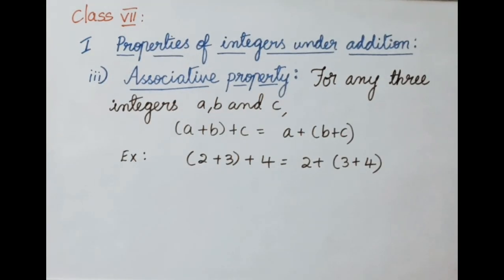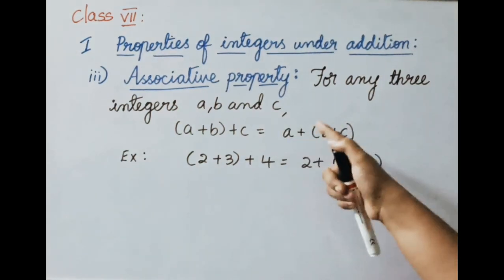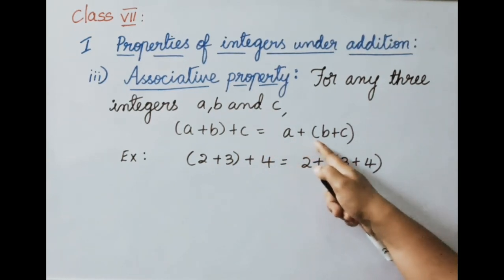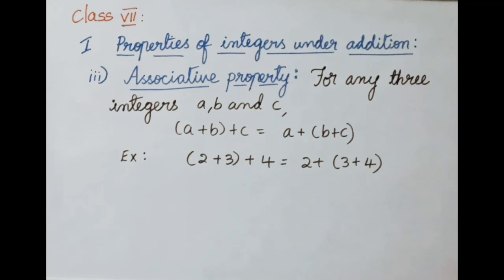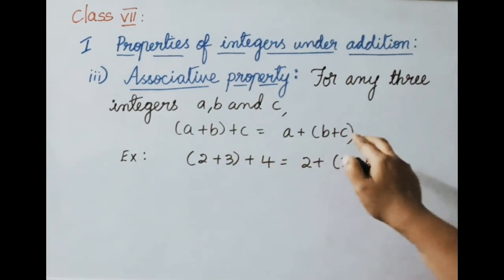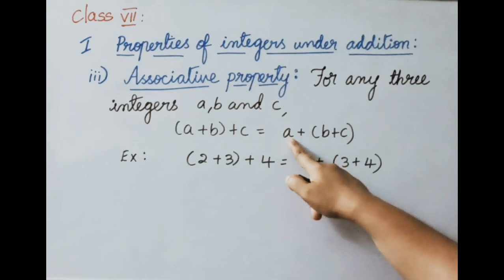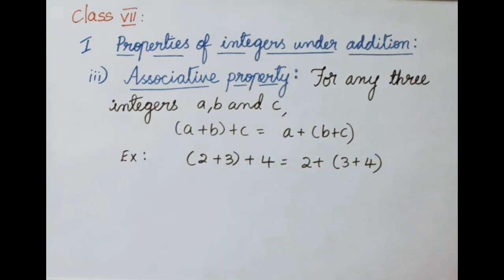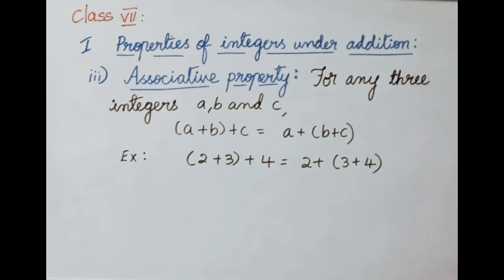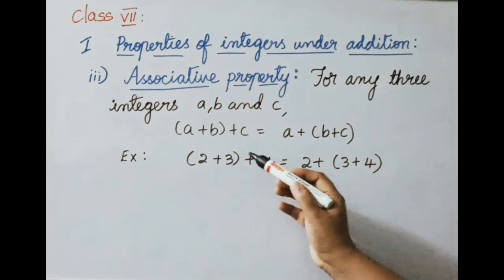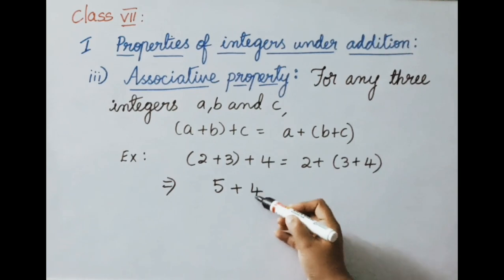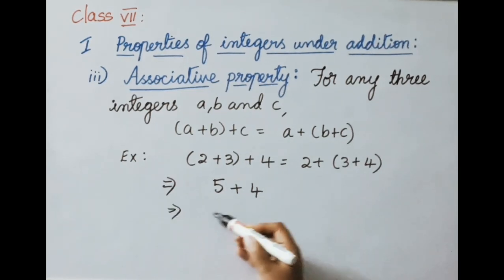Associative property under addition: for any three integers A, B and C, (A plus B) plus C equals A plus (B plus C). That means when adding three integers, whether we add the first two or the last two first, we get the same answer. Example: (2 plus 3) plus 4 equals 2 plus (3 plus 4). LHS: 2 plus 3 equals 5, then 5 plus 4 equals 9.